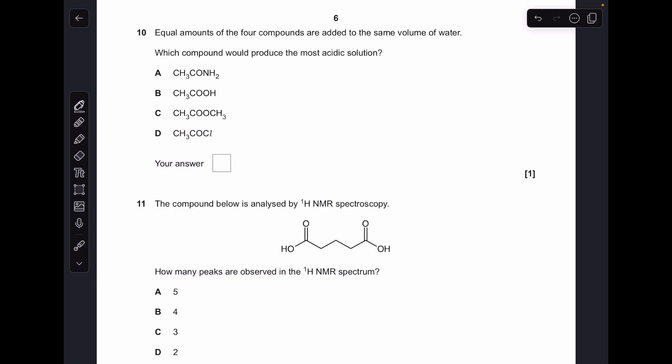Number ten. Equal amounts of the four compounds are added to the same volume of water. Which would produce the most acidic solution? In A, you've got a nitrogen that would accept a proton. That's basic, so it's not A. B could be B because that's a weak acid, so we'll put a question mark there. C is an ester. They're neutral, not that one. The ethanoyl chloride, when it reacts with water, generates carboxylic acid, ethanoic acid in this case, but it also generates HCl. You're making a strong acid and a weak acid, so D is the answer.